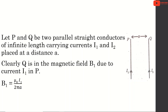Let P and Q be two parallel strip conductors of infinite length carrying currents I1 and I2, placed at a distance A. Q is in the magnetic field B1 due to current I1 in P. B1 is equal to mu0 I1 divided by 2 pi A.